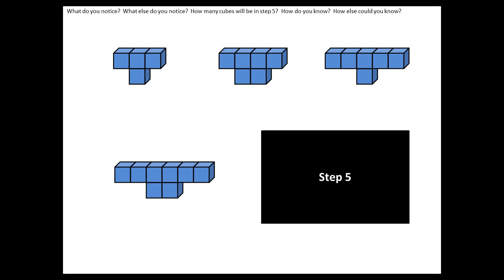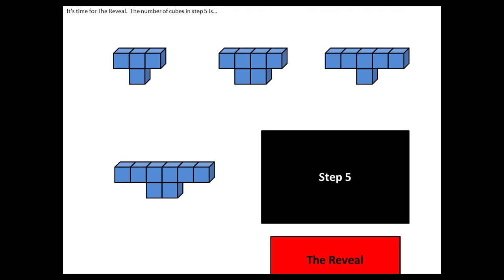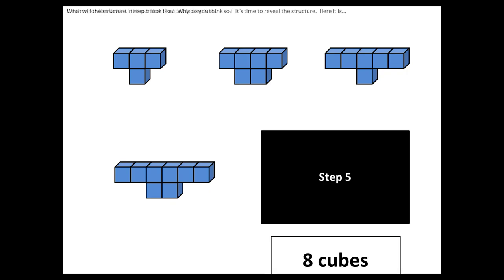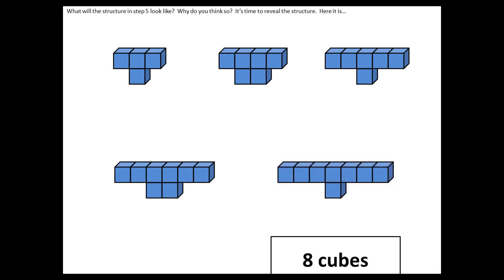Now, the ending of the resource is also unique. There is a reveal at the end, but what the reveal shows is the number of cubes in step five. What it does not show is the structure itself. After the students see the number of cubes, but before they see the structure, they have one final chance to visualize the structure and share with others what they think the structure will look like. And then in the end, the structure itself is revealed.